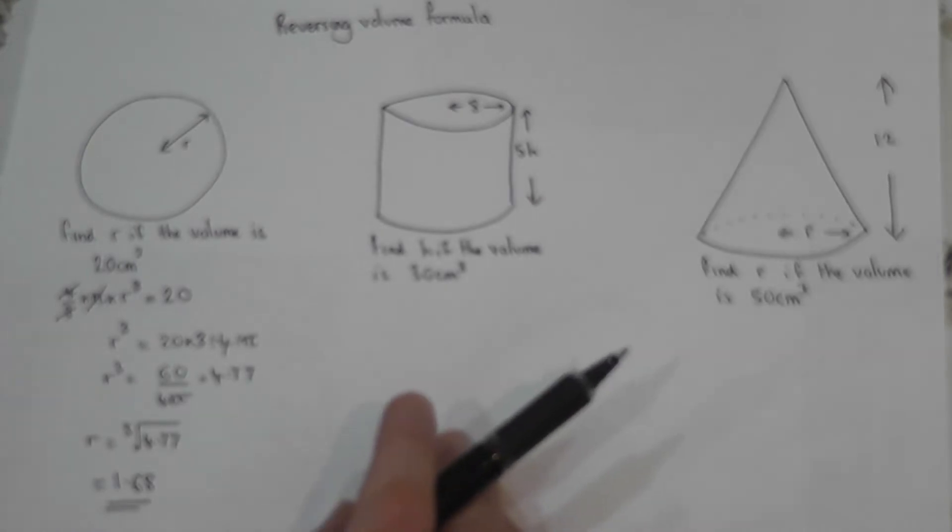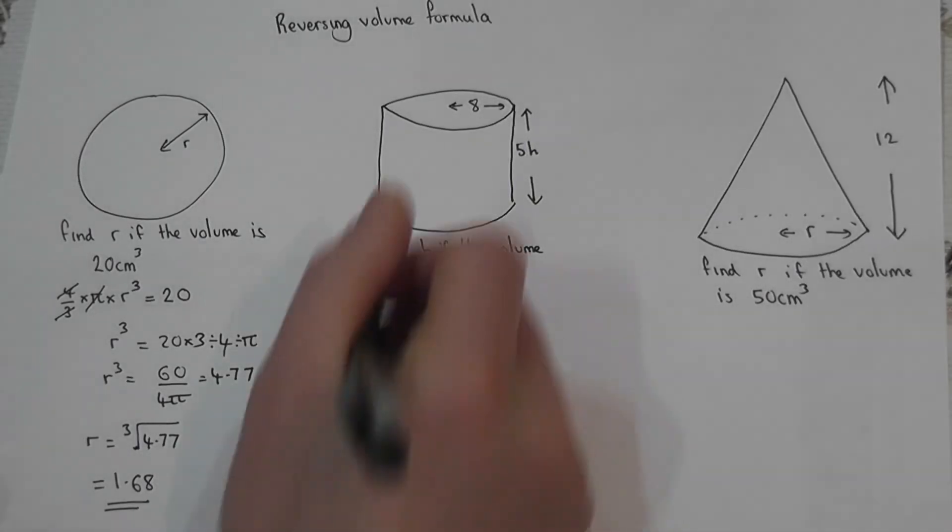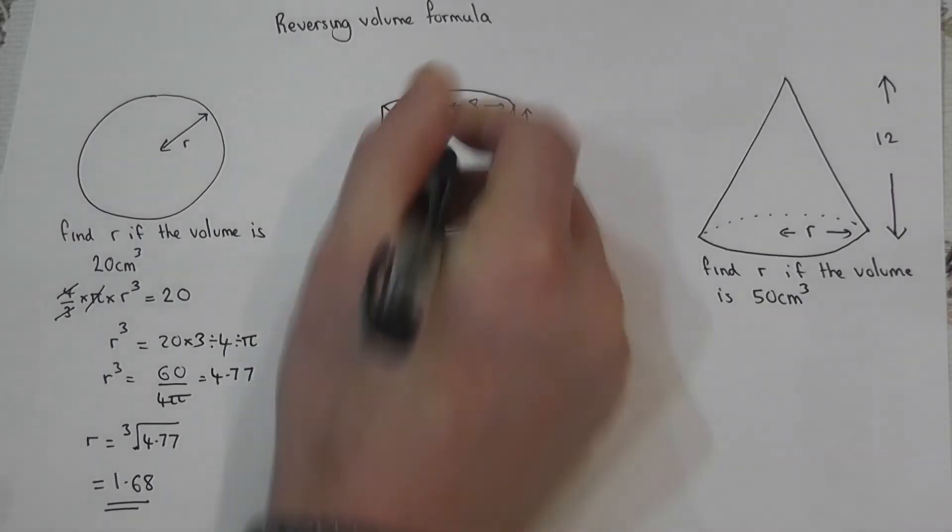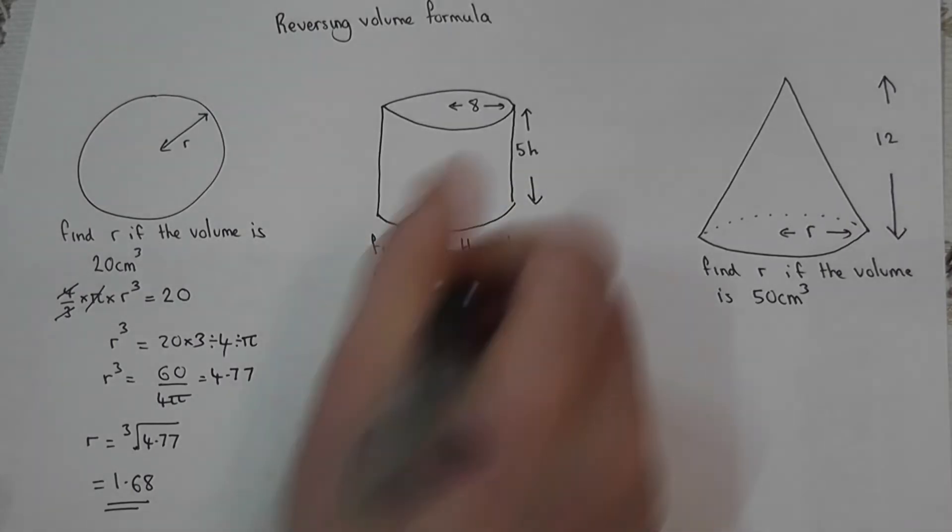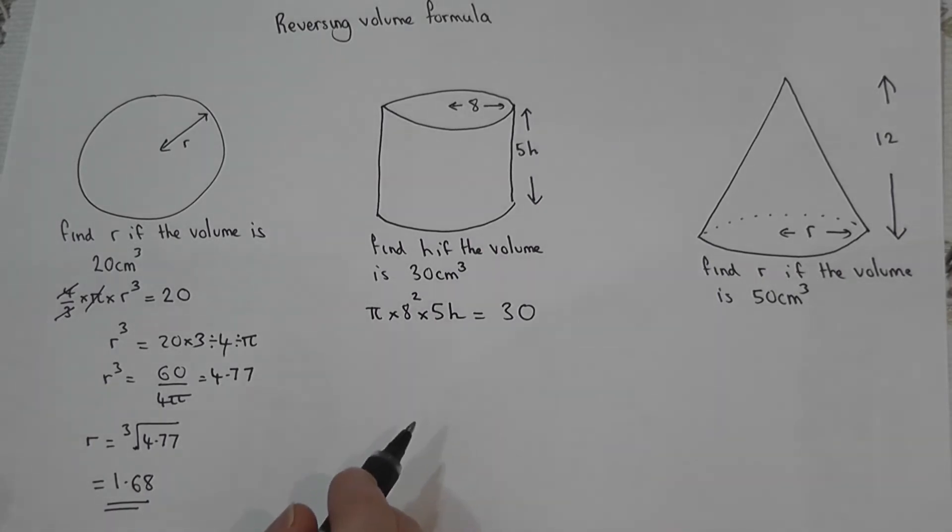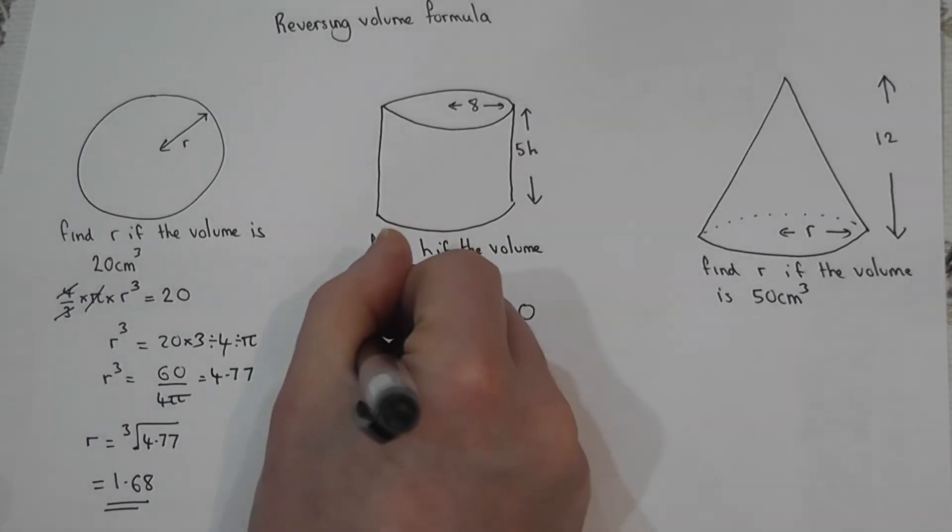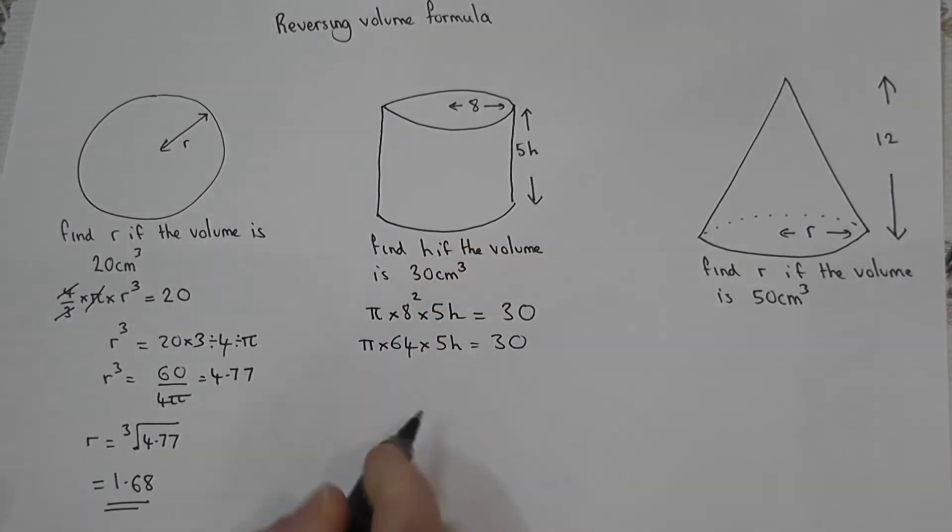Okay, so for the second one it's now a cylinder. We know that the formula for a cylinder is pi times r squared times h will equal the volume. So in this case, pi times by the radius squared which is 8, times by the height which in this case is 5h, must equal the volume of 30. I must unravel this, but to begin with I'm going to simplify this left hand side. Now 8 squared is 64, so pi times 64 times 5h equals 30, and 64 times by 5 is 320.